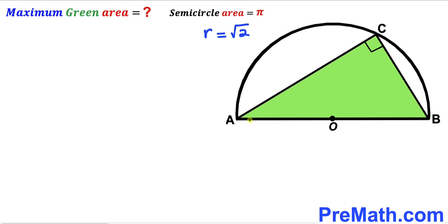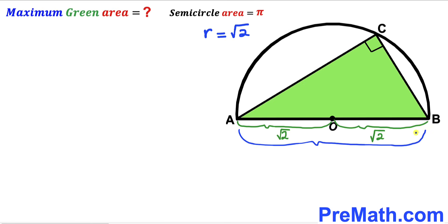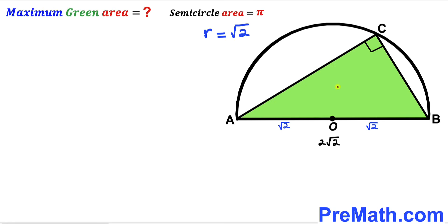So radius OA equals square root of 2, and likewise radius OB equals square root of 2. Therefore the full diameter AB equals 2 times the square root of 2. Now, since we are interested in the maximum possible area of this green shaded triangle, let's proceed.